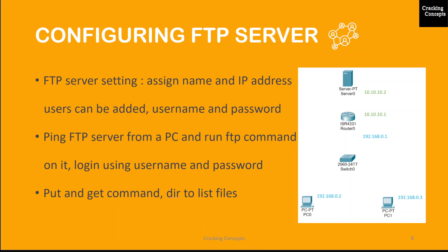What is going to happen here is: I'll write a file and save it on PC0. If FTP is enabled, I should be able to access it from PC1. I'll connect from PC0 to the server and run the FTP command, create a file and save it locally, then put that file into the FTP server. Then I'll go to PC1, run an FTP command, connect to the server, and try to get the file written by PC0. If I can successfully retrieve the file to PC1, it means the FTP server has been configured successfully.